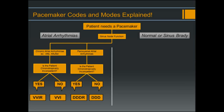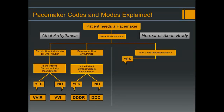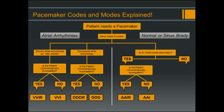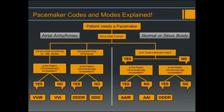For patients with normal sinus or sinus brady conduction: if AV node conduction is intact and the patient is chronotropically incompetent, the best mode is AAIR; if not incompetent, AAI. However, in the U.S., we will rarely if ever see anybody programmed to AAI or AAIR due to legalities — most of these patients will probably be programmed DDD or DDDR to ensure backup ventricular pacing if ever needed. If AV node conduction is not intact and the patient is chronotropically incompetent, the best mode is DDDR; if not incompetent, DDD.